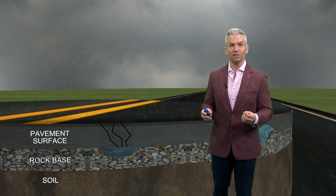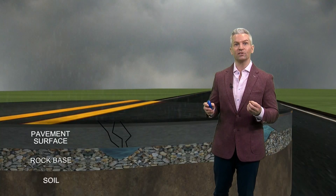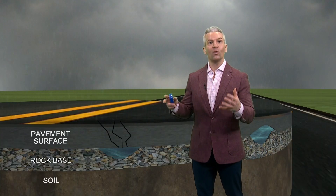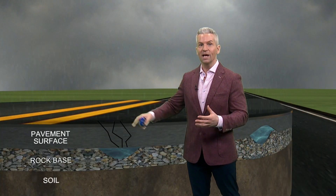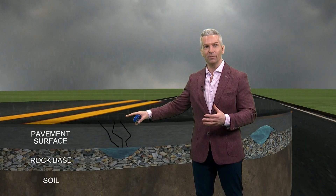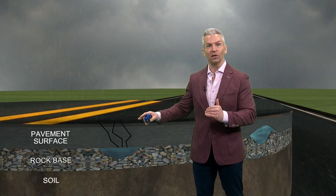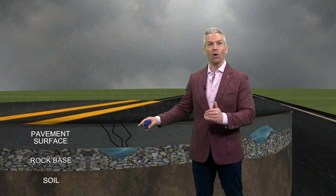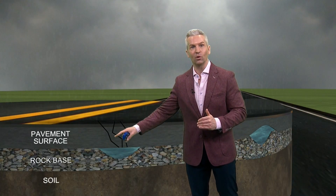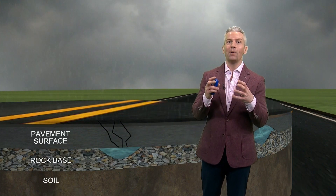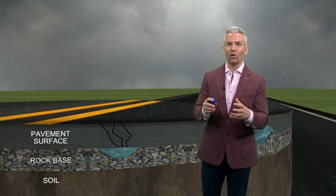So how do they form? To understand this, we start by looking at the surface of the pavement, where cracks in the surface allow water to enter the pavement, seeping below the pavement layer. Once this happens, water is allowed to pool underneath the surface, creating a pocket of liquid water.